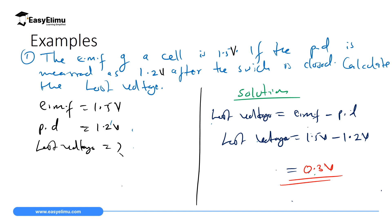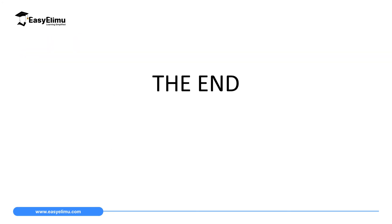The voltage used by the bulb is 0.3 volts. That marks the end of our lesson today. For more questions and resources on this lesson, visit ECLimo learning simplified — the link is down here at the website — and you will learn more as we proceed.